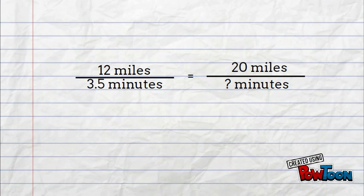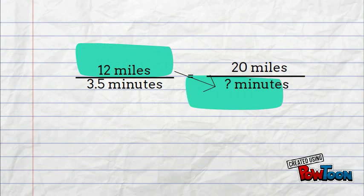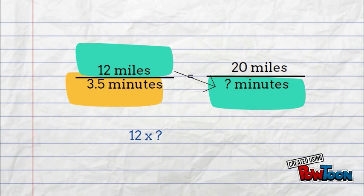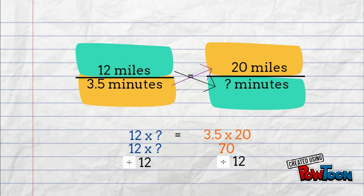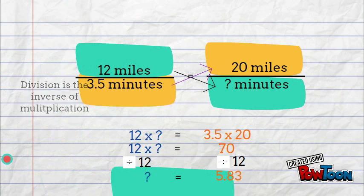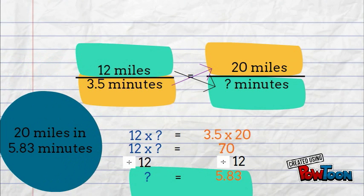Let's solve this proportion using cross product. We'll do 12 times our unknown, and 3.5 times 20. Let's do the math we can. Then divide both sides by 12 to get an answer of 5.82 minutes.